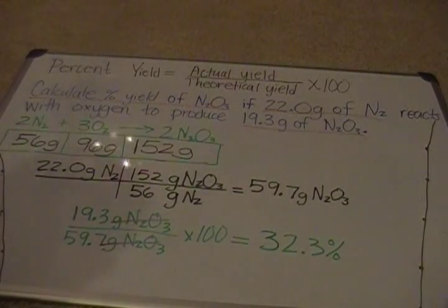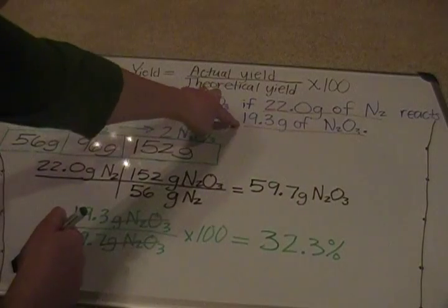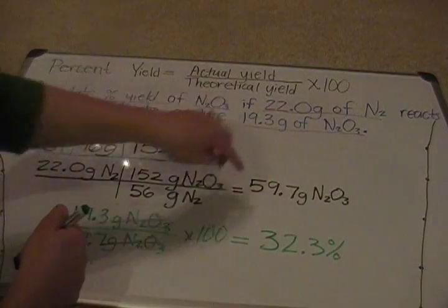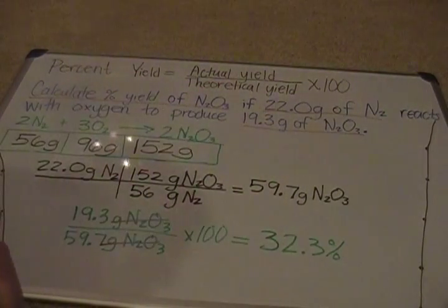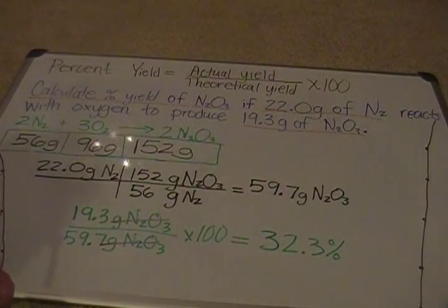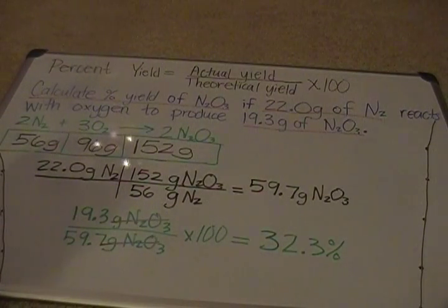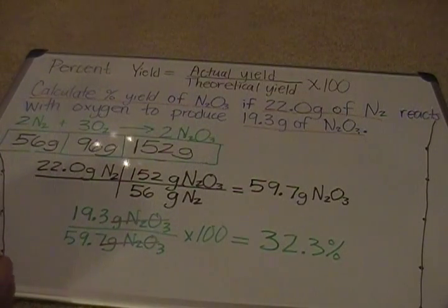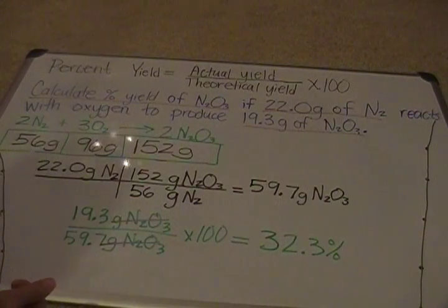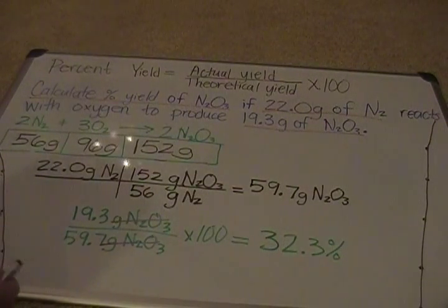That looks like a reasonable answer: 19.3 is close to 20, and 59.7 is close to 60, so it should be about a third — and 32.3% is about a third. You can always double-check that your answer looks reasonable. This is how you calculate percent yield. On your test tomorrow, you'll have a question like this, and also one where you're already given the actual and theoretical yield and just need to plug in. This was number 11 on the review sheet — good luck with the review sheet and the test tomorrow.